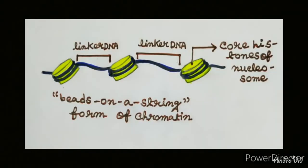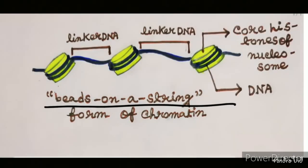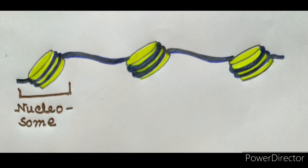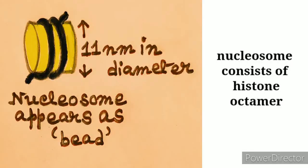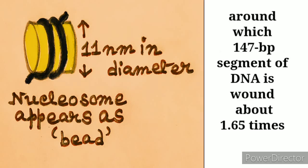Under the electron microscope, this structure appears as beads on a string structure. The beads are the basic repeating units of chromatin and these are called nucleosomes. A single nucleosome consists of a histone octamer, around which a 147 base pair segment of DNA is wound about 1.65 times, a little less than two complete turns of DNA around the histone octamer.